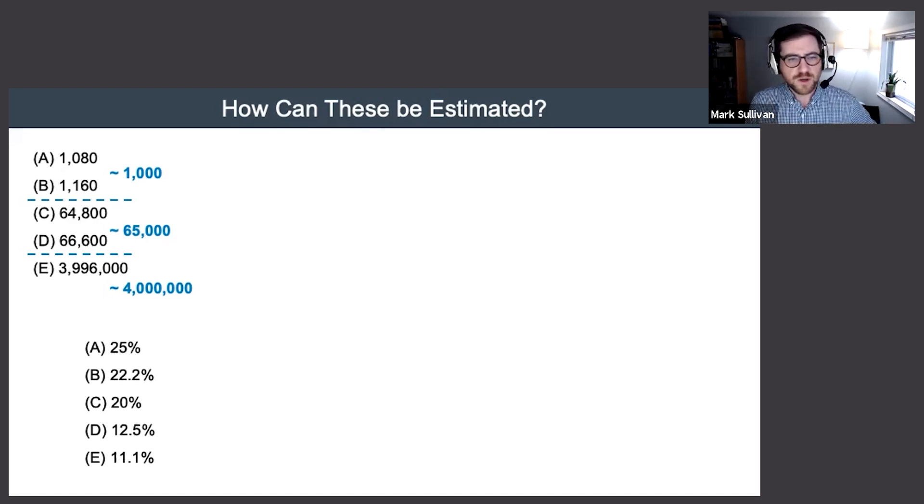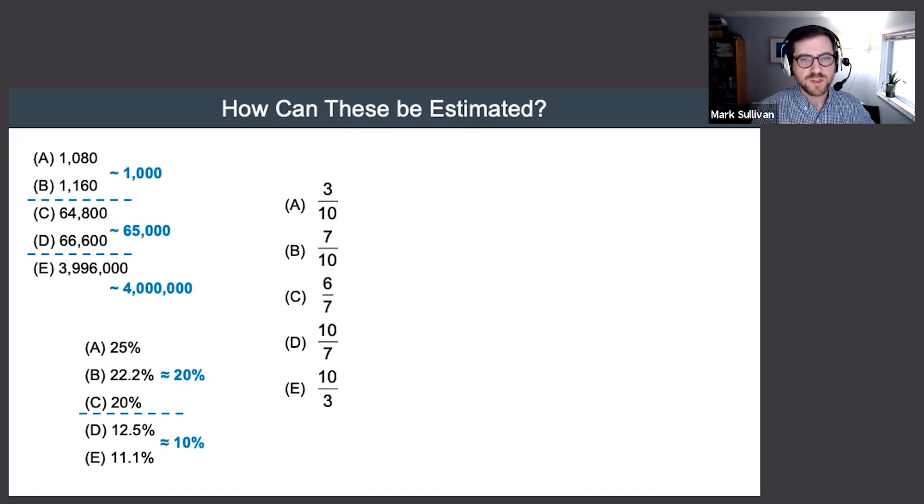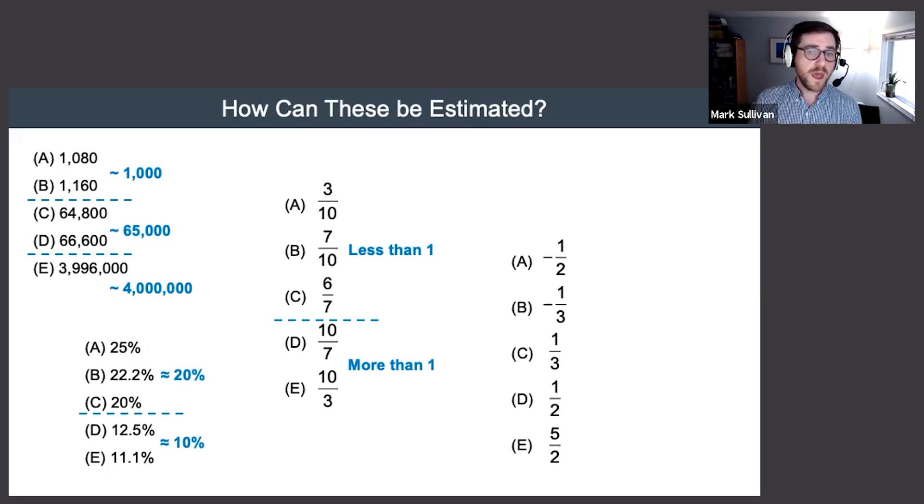What about this problem here? So again, if we break things up a little bit, these choices are a little closer for the most part, but I can still split it into two groups - one of which is around 20%, the other around 10%. Try it again, this time with fractions. What distinguishes multiple groups within these answer choices? Two of the choices are actually more than one, they're top-heavy fractions. Three of them are less than one. If it's useful, I might further distinguish: A is quite a bit less than one, B and C are a little closer to one, et cetera. But this might be a good start to the problem.